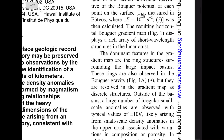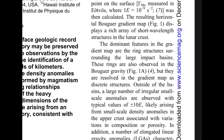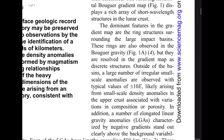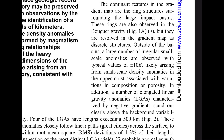In other words, they mapped out what has to be down there: where things were supposed to fall evenly and didn't, they took the difference and modeled it on the computer. The resulting horizontal Bouguer gradient map displays a rich array of short wavelength structures in the lunar crust. The dominant features of the gradient map are the ring structures surrounding the large impact basins. Outside the basins, a large number of irregular small anomalies are observed, likely arising from small-scale density anomalies in the upper crust associated with variations in composition or porosity.